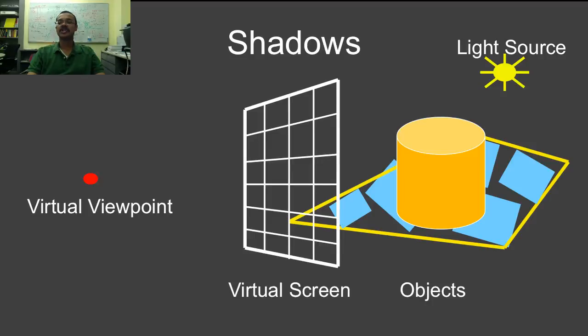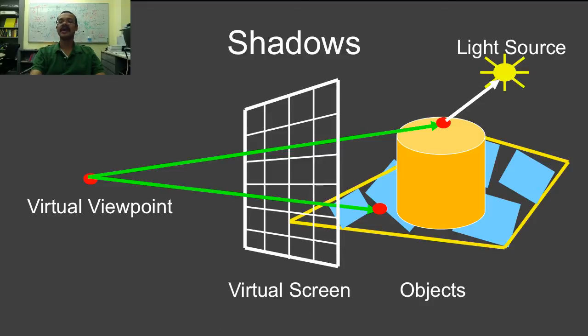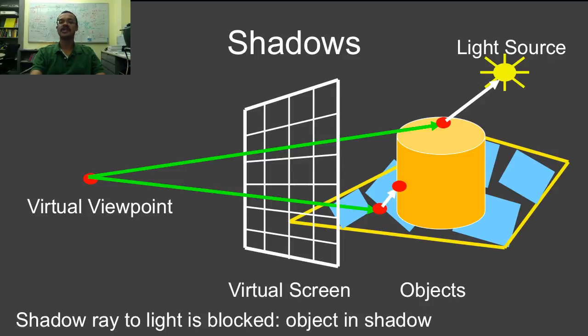First, let's talk a little bit about shadows. You have this camera, and you shoot a ray to the object, and then you shoot a ray to the light source. If the shadow ray to the light source is unblocked, then the object is visible. On the other hand, consider another point here, and the ray to the light source is blocked, so the object is in shadow.